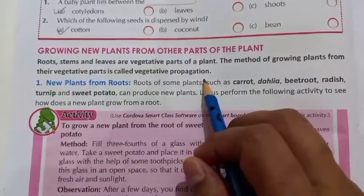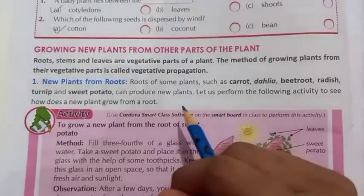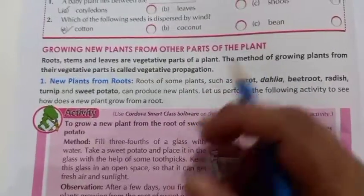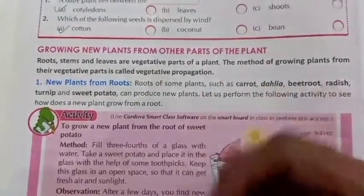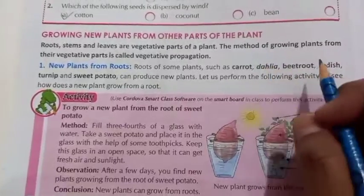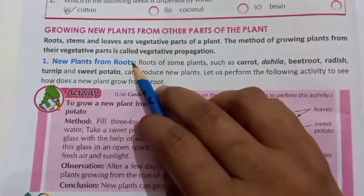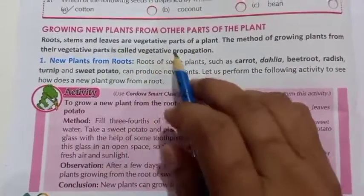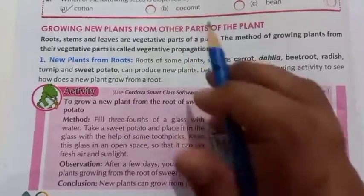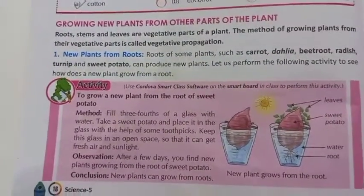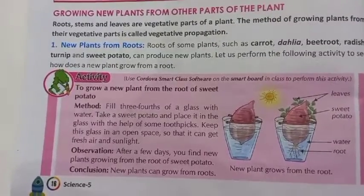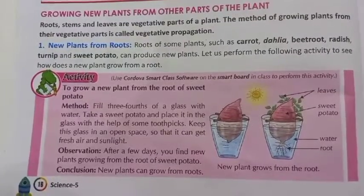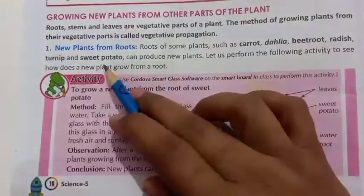Seeds के अलावा plants roots से भी grow कर सकते हैं, stems से भी grow हो जाते हैं, leaves से भी बन जाते हैं, और spores के ज़रिये भी एक नया पौदा बनता है. इस method को — growing plants from their vegetative parts, i.e., root, shoot, leaves, and spores — vegetative propagation कहते हैं.